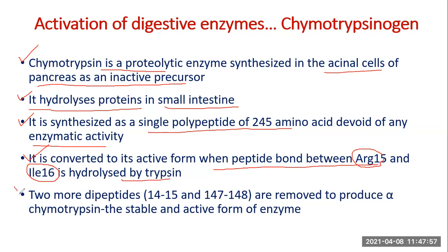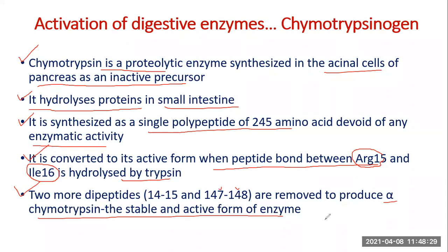Chymotrypsinogen is converted to its active form when the peptide bond between arginine at position 15 and isoleucine at position 16 is hydrolyzed by trypsin. Two additional dipeptides — amino acids 14–15 and 147–148 — are removed in a subsequent step to produce alpha-chymotrypsin, the stable and active form of the enzyme.